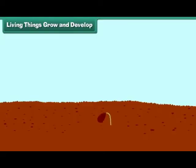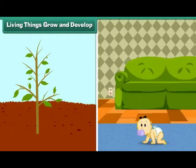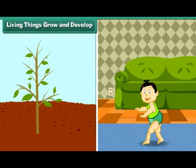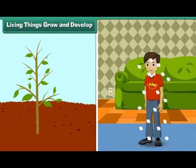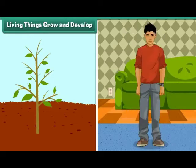Living things grow and develop. All organisms grow and develop. Growth results in an increase in size, weight, and synthesis of new protoplasm. In animals, growth is limited to a certain age, while plants grow throughout their life.